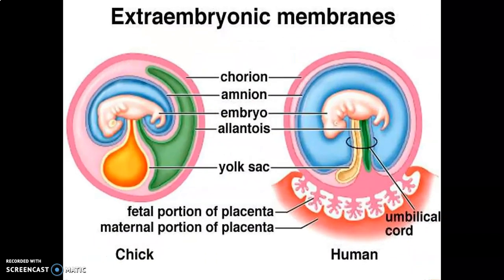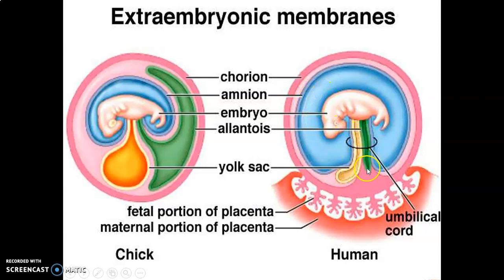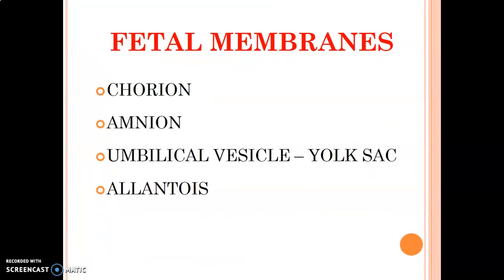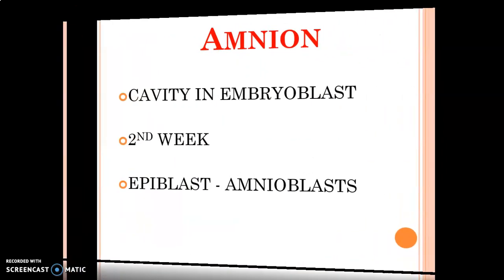We have different extra-embryonic membranes: the chorion, the amnion, the allantois, and the yolk sac. This portion forms the umbilical cord. So chorion, amnion, umbilical vesicle from the yolk sac, and allantois — those are the fetal membranes.